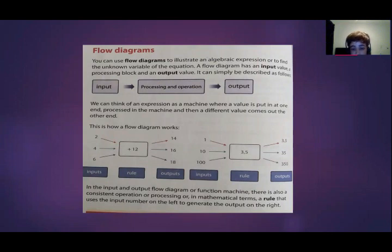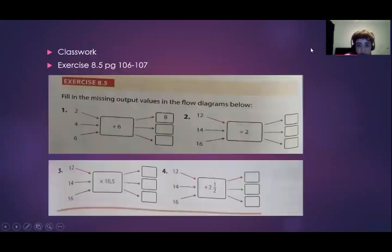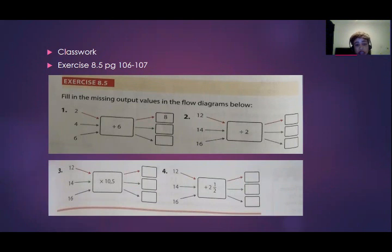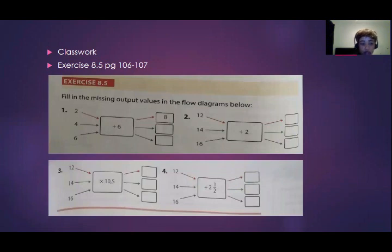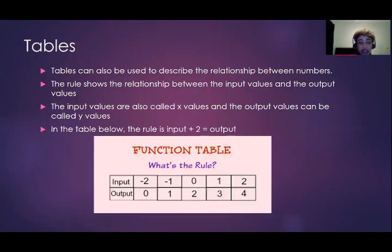Sometimes you'll be given a flow diagram without a specific sign in the operation box — you need to fill that in. Given the input and output, you need to identify the relationship. The classwork for flow diagrams is exercise 8.5, pages 106 to 107. Fill in the missing output values in the flow diagrams. You'll need to draw the flow diagram, put in the input values, and the output values. Complete questions one, two, three, and four.